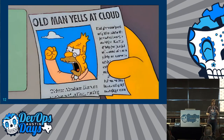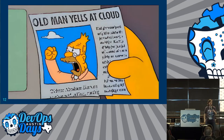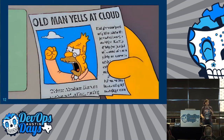We asked AWS: you've got to give us something better than this. Within the past year they finally came out with a brand new feature called permissions boundaries, and this is something I'm really interested in.